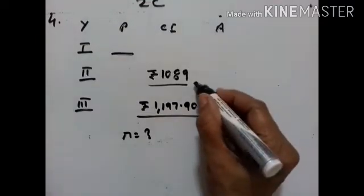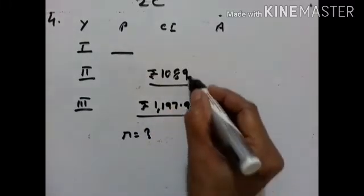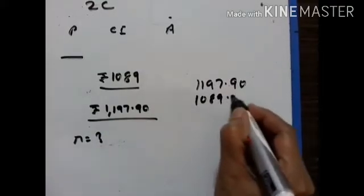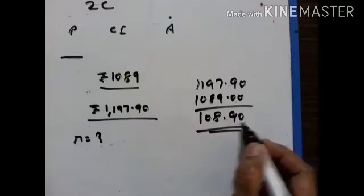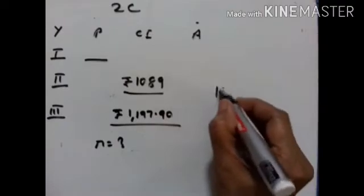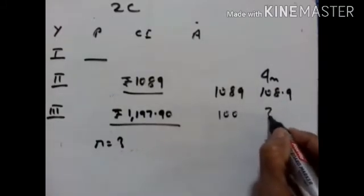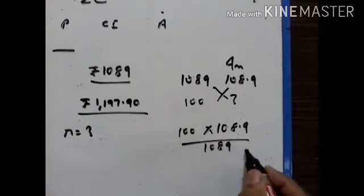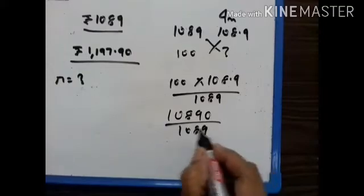As you know, the difference between the interest of the second year and the interest of the third year is the interest on the second year's compound interest. So this difference is the interest on this: 1197.90 minus 1089 = Rs. 108.90, which is the difference between the compound interest of the third year and compound interest of the second year. For 1089, the interest is equal to 108.90. For 100, what is the interest? 100 into 108.90 upon 1089, when multiplied by 100, we get 10890 upon 1089, which is equal to 10.